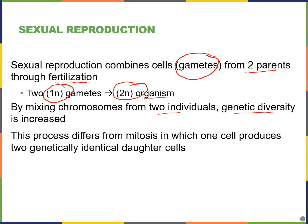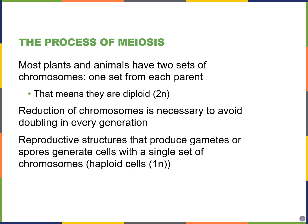This is different from mitosis because in mitosis, we started with a single cell and produced two identical daughter cells. Most plants and animals have two sets of chromosomes because they got one set from each of their two parents, so these are diploid organisms.